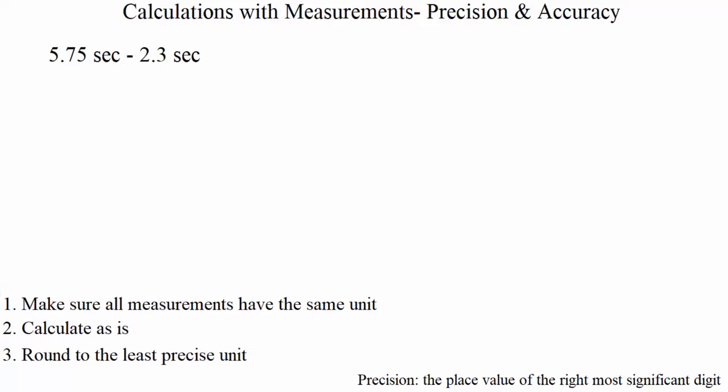Step one: make sure all measurements have the same unit. Every once in a while you may be given an example where one measurement is in inches, one is in feet, one might be in miles. You can't just calculate with them that way — you have to convert everything to the same unit, such as inches. Looking at this example, we have seconds throughout, so we're good.